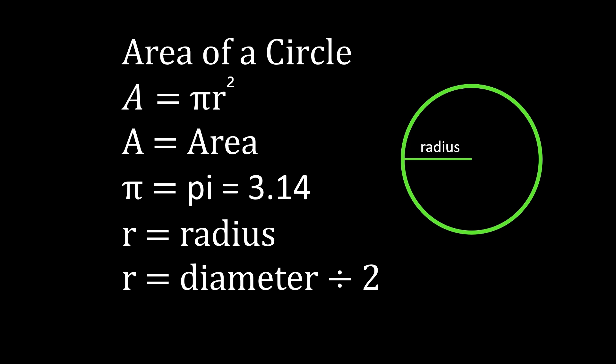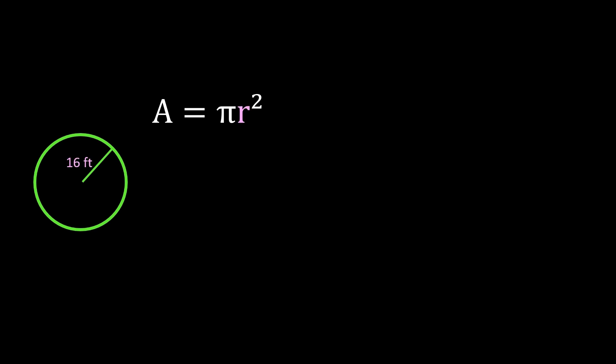Let's take a look at our examples. To find the area of a circle we're going to use the formula area equals pi times radius squared. In this example we do have a radius — our radius is 16 feet — so we will have area equals pi, using 3.14, times our radius of 16 squared.